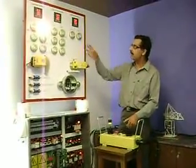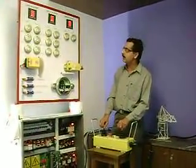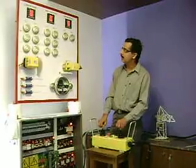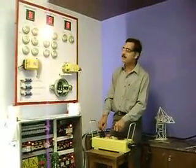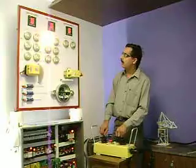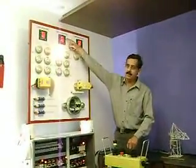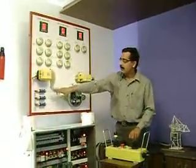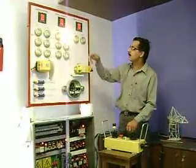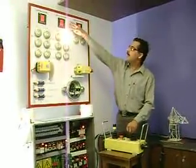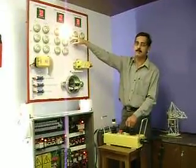Similarly, we can see the trolley in and out operation. This is the trolley in, first speed — you can see the voltage and the frequency here. Similarly, for the trolley out operation, you can see the voltage and the frequency here for the trolley out operation.